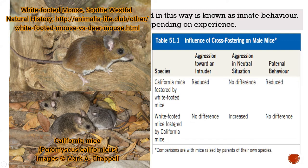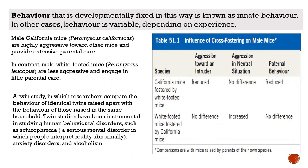White-footed mice fostered by Californian mice show increased aggression. Whereas in the third case — paternal behavior — there is no difference in white-footed mice. From this experiment, we can conclude that if there is little parental care, there will be less aggression against the intruder. If there is high parental care, there will be greater aggression.